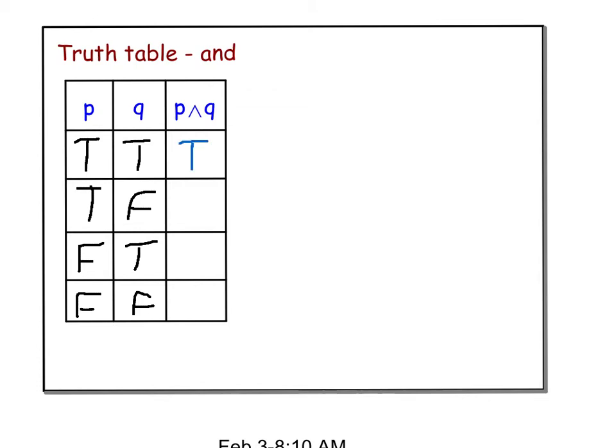In every other case where I have P true here but Q is false, that means because they're not both true, the P AND Q statement has to be false.